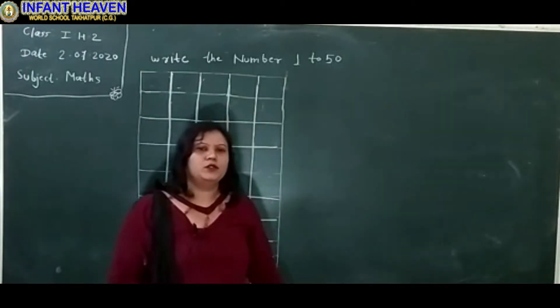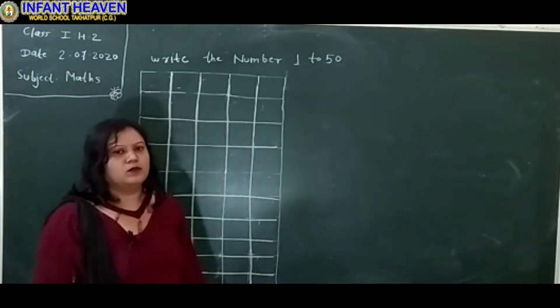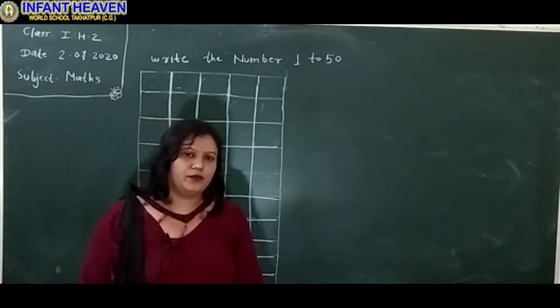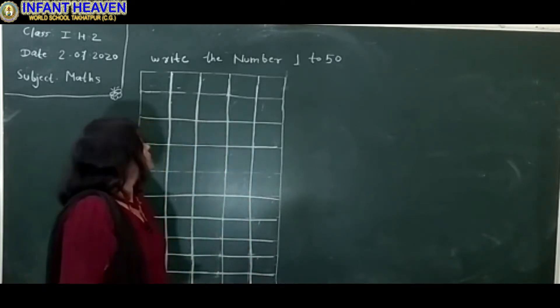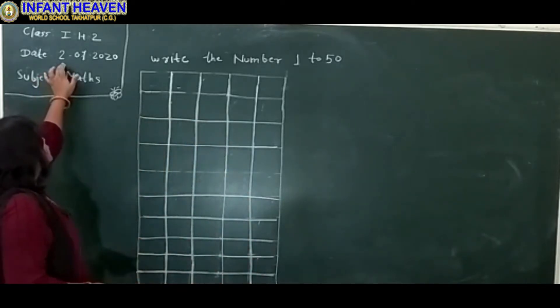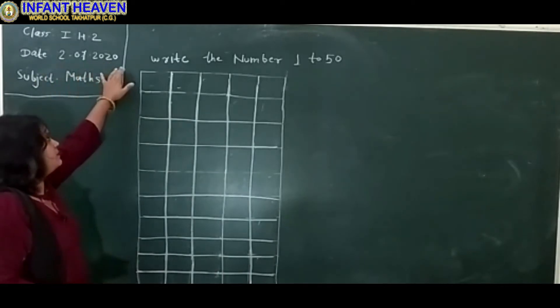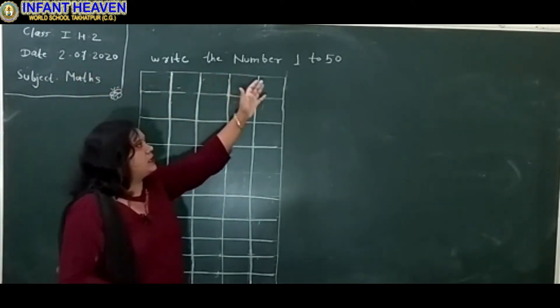Good morning children. Today I will teach you numbers 1 to 50. Today's date is July 2020. Write the numbers 1 to 50.